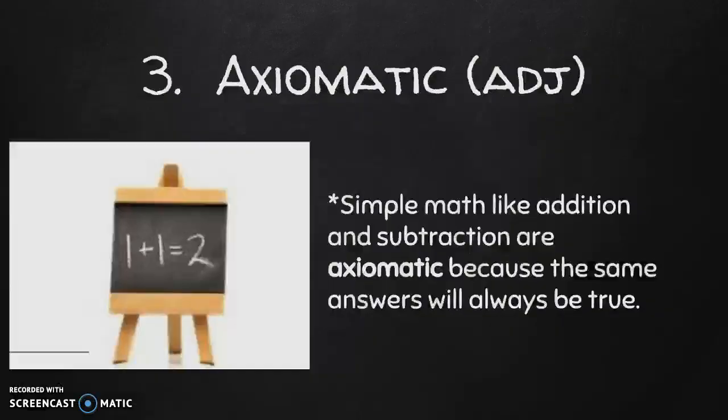Number three is axiomatic, which is an adjective. The definition for axiomatic is self-evident, universally accepted as true. So something like easy math would be axiomatic — it's just accepted as true, we all know it's correct. The sample sentence is: simple math like addition and subtraction are axiomatic because the same answers will always be true.